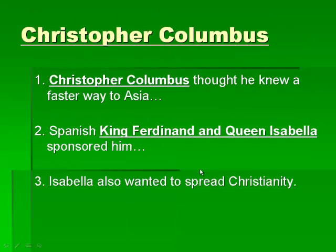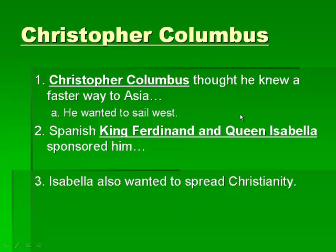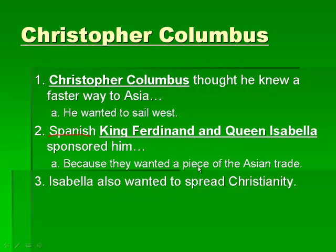That's where Christopher Columbus comes in. Columbus thought he knew a faster way to Asia — he sailed west through the Atlantic Ocean because he thought he would get right to Japan and the Philippines and China really quickly. The problem is Christopher Columbus thinks that the world is a lot smaller than it actually is. He thinks he's just going to sail across the Atlantic and Asia will be right there. He doesn't realize there's an entire continent and thousands of miles of ocean. So he goes to Portugal and asks the Portuguese king for money to travel west, but the king says no.